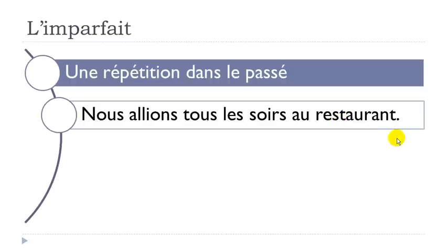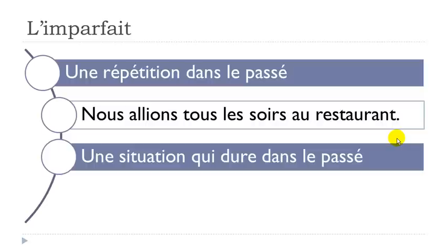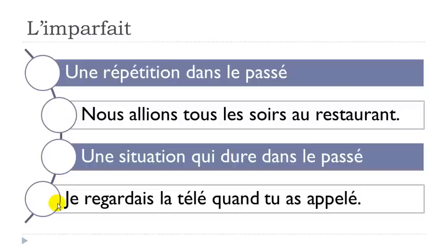When you want to express duration — 'durée', something that lasts in the past — use l'imparfait. Here's a contrast with passé composé: 'je regardais la télé' uses l'imparfait because watching TV lasts a while. 'Quand tu as appelé' — when you called — uses passé composé because it's a single action.